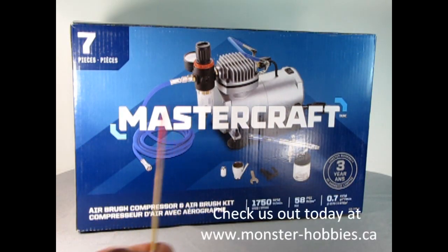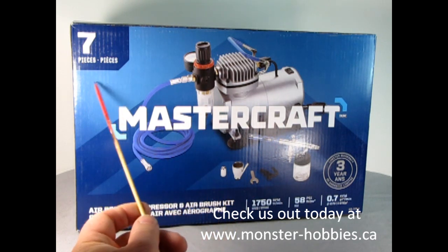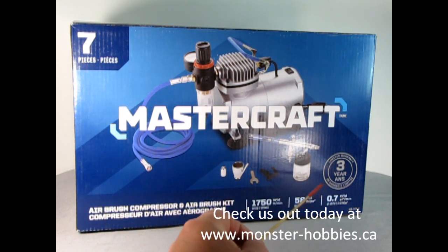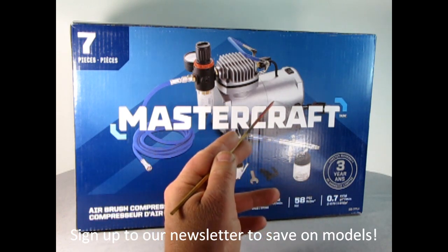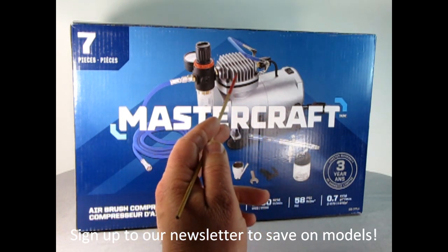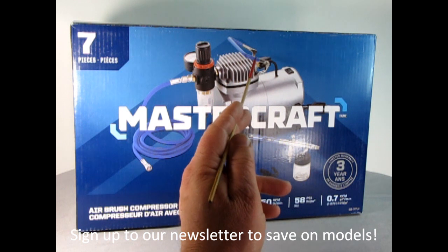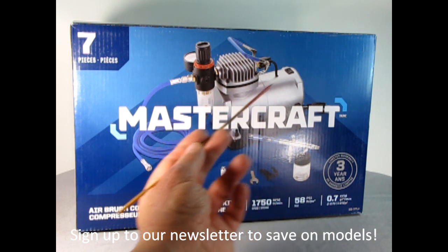Here we have our Mastercraft air compressor unit and it consists of seven pieces. Canadian Tire gives you a three year warranty. It's 1750 RPM, 58 PSI and 0.7 CFM. The compressor has a small air canister underneath with a nice blue handle and an off-on switch.